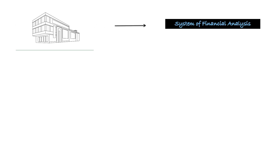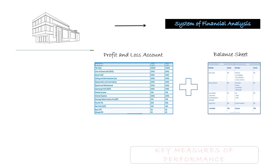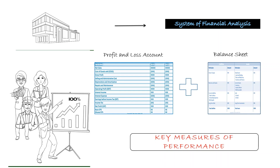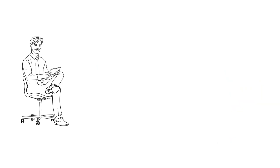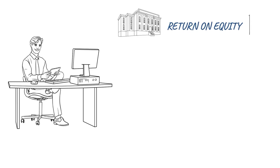Before we delve into the technicalities of the concept, let's understand the background and the importance of the same. The DuPont company of the US pioneered a system of financial analysis that blends information from the profit and loss account and the balance sheet into key measures of performance. Investors and financial analysts from around the world still use it widely. It helps analysts see how the firm's decisions, activities and strategies interact with each other to produce the return on equity — in other words, it helps analysts understand what is driving a company's ROE.